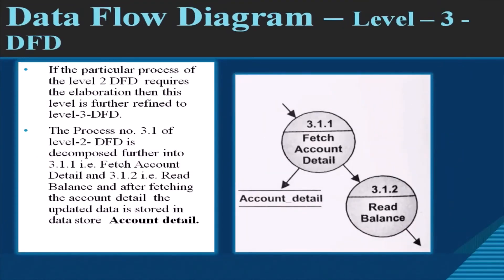In level 3 DFD, processes from level 2 are further decomposed. For example, if process 3.1 of level 2 DFD requires elaboration, it is refined to level 3. Process 3.1 is decomposed into 3.1.1 fetch account detail and 3.1.2 read balance. After fetching the account detail, the updated data is stored in the data store 'account detail', represented as parallel lines or an open rectangle.